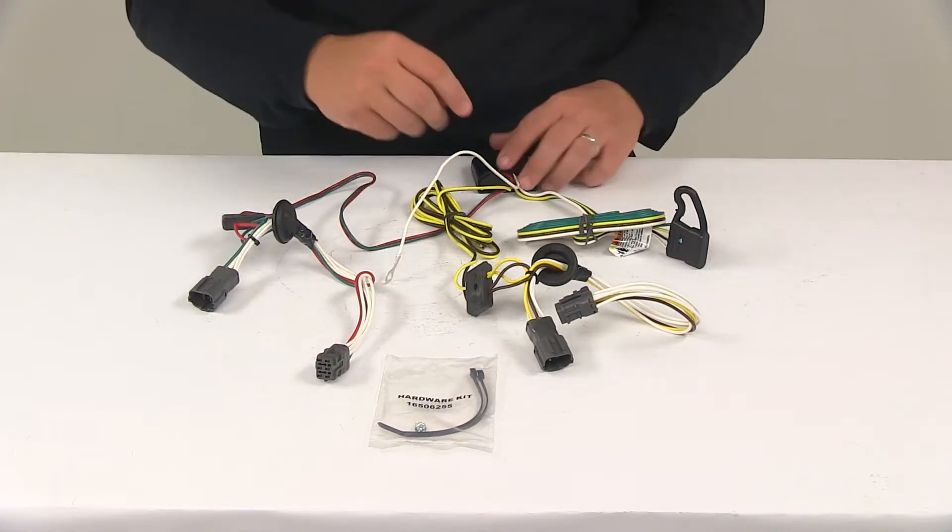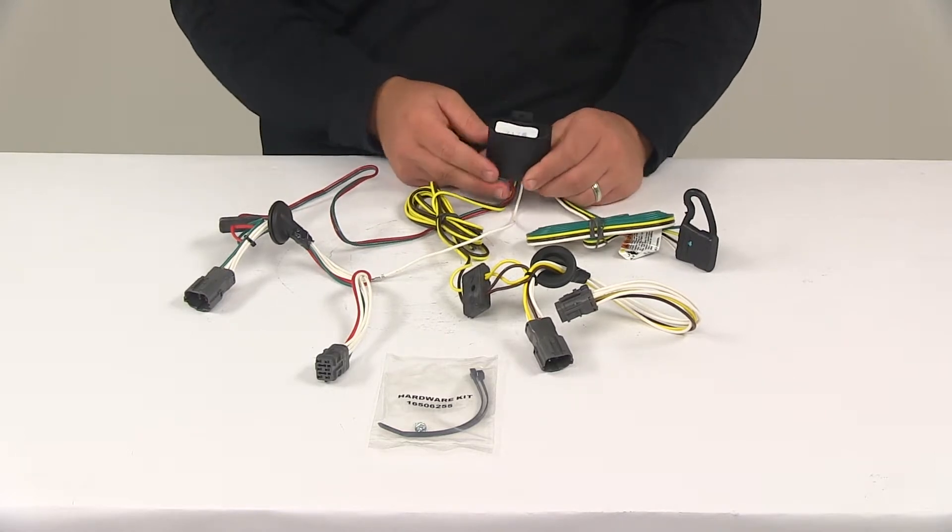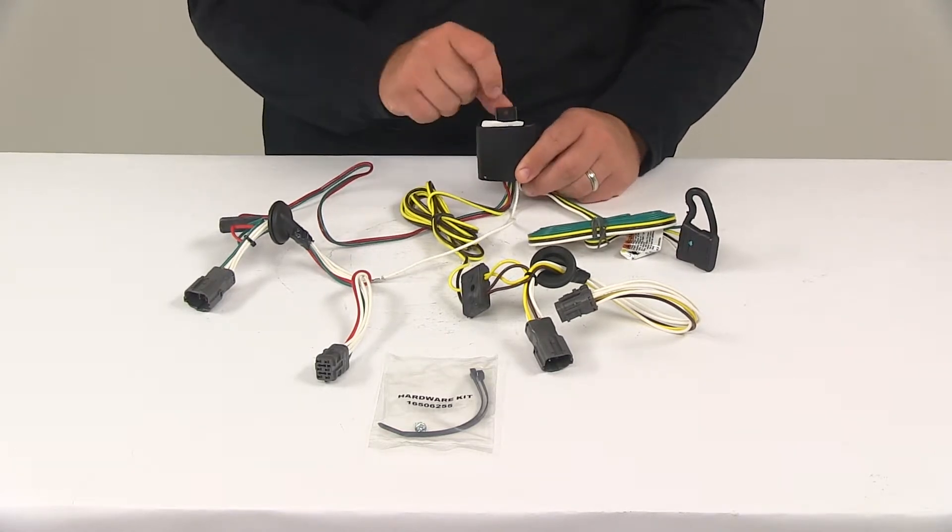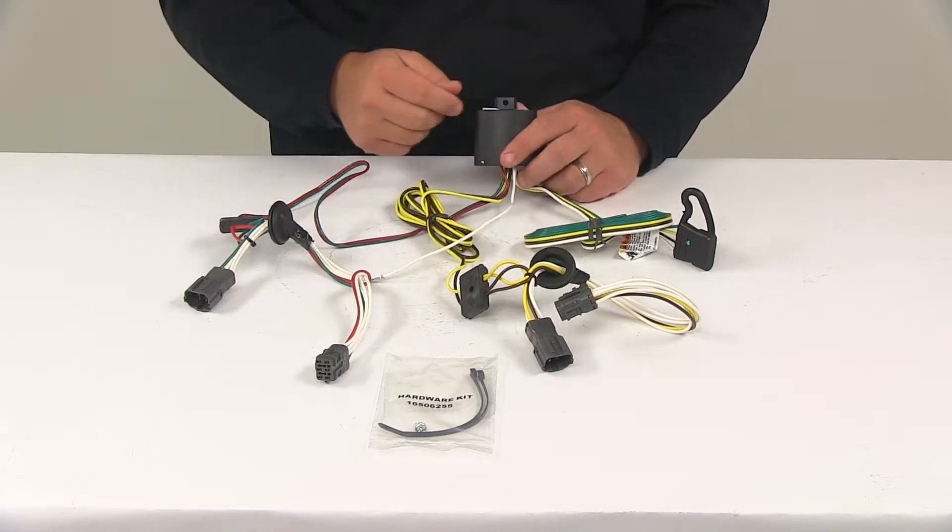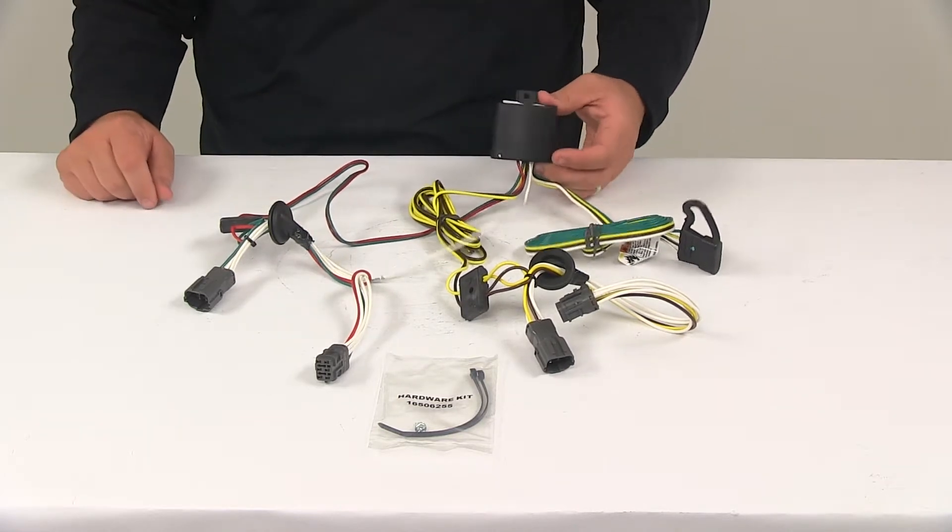Then, you're going to need to mount the converter box. That's going to be this right here. You can mount that with a screw as well. There's a hole right there to get that mounted. Or, you can use the zip ties provided with the kit to get it secured as well.